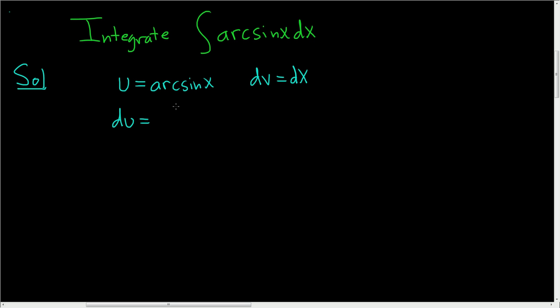So du, that's 1 over the square root of 1 minus x squared, and then we have dx. And when we integrate dv, we simply get x.